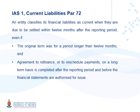Paragraph 72 reads as follows: an entity classifies its financial liabilities as current when they are due to be settled within 12 months after the reporting period. This is the same as paragraph 69. This paragraph goes further and says even if the original term was for a period longer than 12 months.